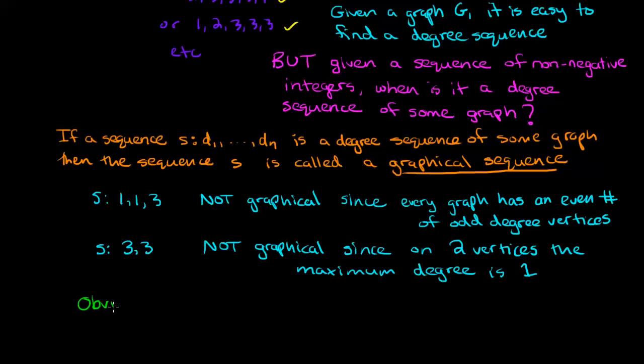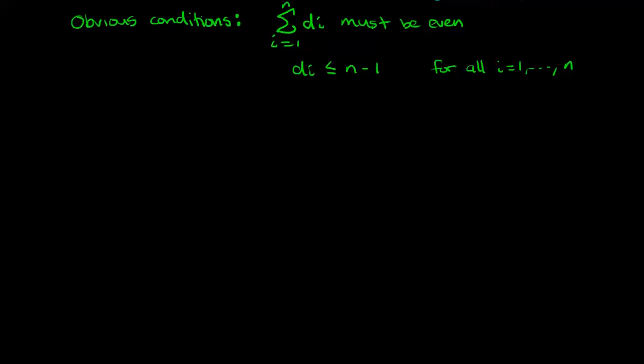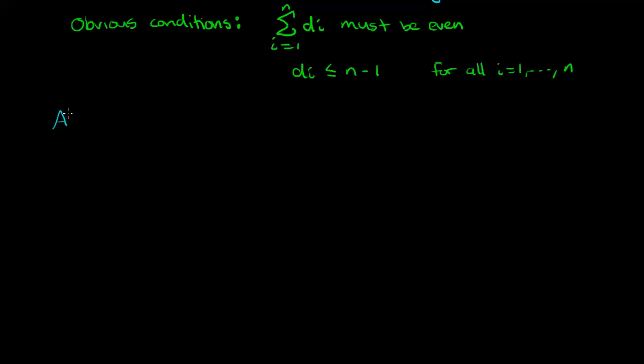So we've discovered some obvious conditions. The sum of the di's from i equals 1 to n must be even. And also di can be at most n minus 1 for all i equals 1 up to n. This second condition is because if we have n vertices in the graph then any given vertex can be adjacent to at most all other vertices.